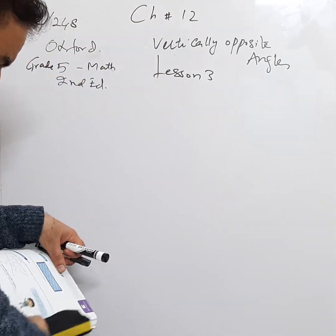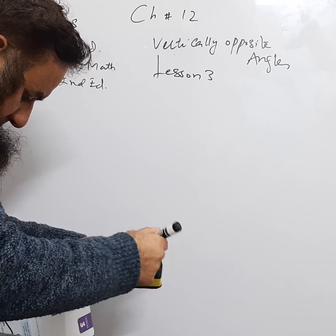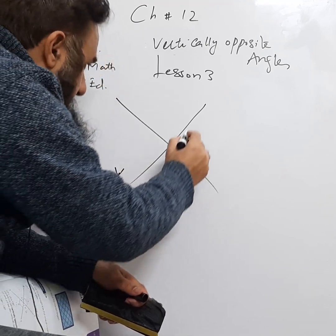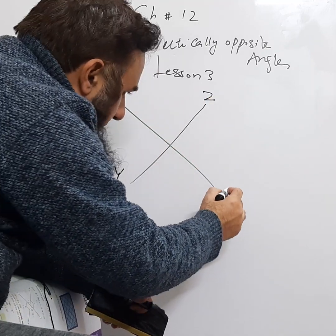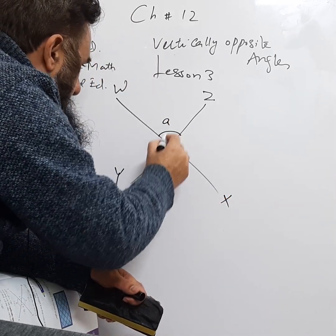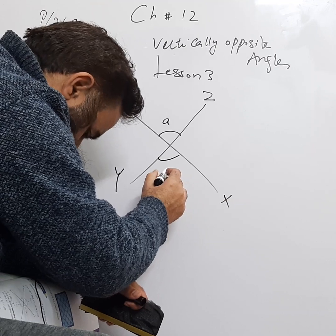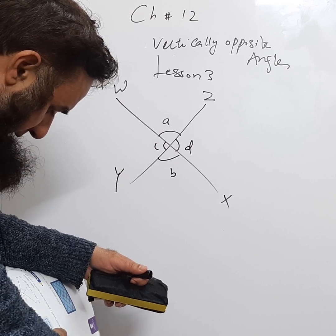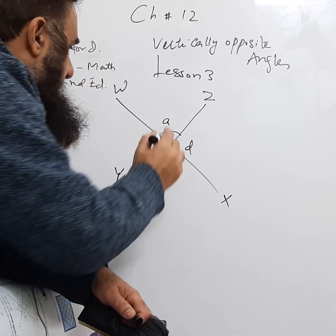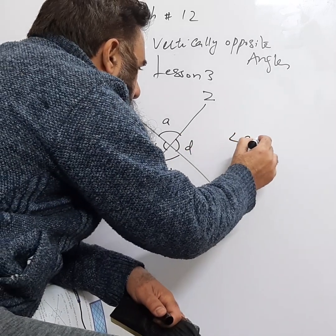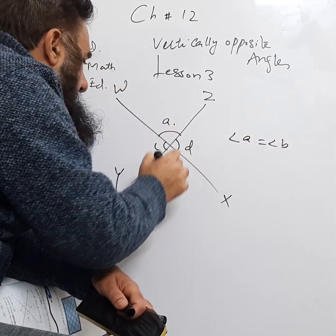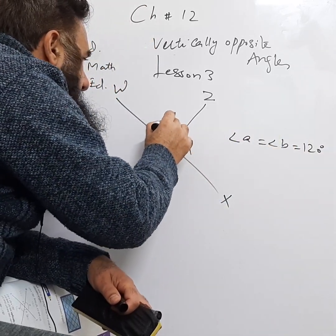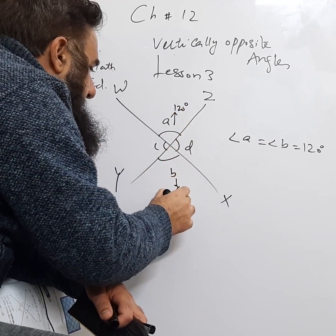Now, here is a diagram. There are two lines forming an X shape. The four angles are labeled X, Y, Z, W — and the angles between them are A, B, C, and D. They are saying angle A is equal to angle B, and both equal 120°. Since A and B are vertically opposite, both are equal to 120°.